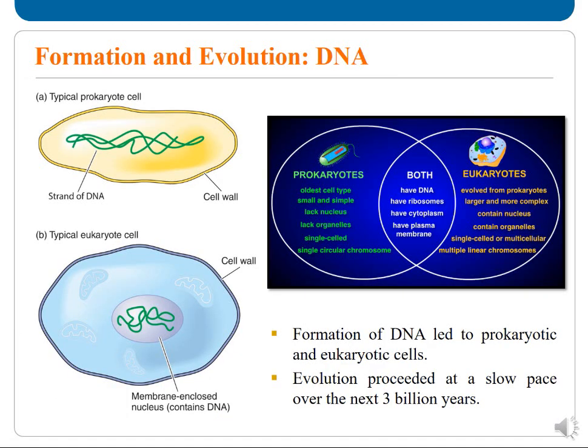Formation of DNA led to prokaryotic and eukaryotic cells. Prokaryotic cells are the oldest type of cell — very small and simple, lacking a nucleus and organelles, and single-cellular. Eukaryotes evolved from prokaryotes; they are larger and more complex, containing nuclei and organelles, and can be multicellular.